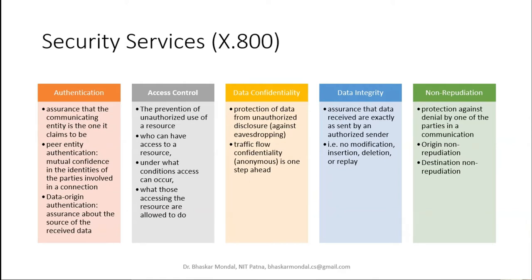Traffic flow confidentiality goes one step ahead: when your traffic is flowing on the network and data is transmitting from one system to another, the data should be anonymous on the channel. Even if somebody captures a packet, they should not be able to identify whose data it is. Then comes data integrity — assurance that the data received is exactly as sent by the authorized user, with no modification, insertion, deletion, or replay on transmission.